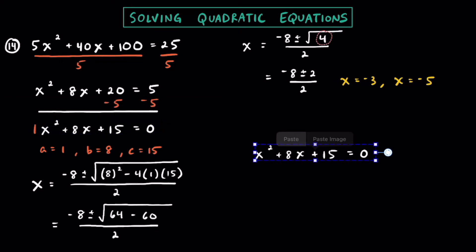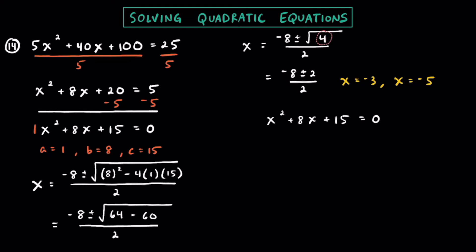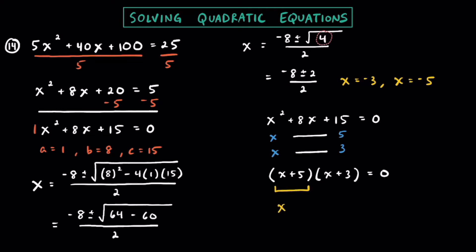Let's also show the factoring method using x squared plus 8x plus 15 equals 0. Since all terms are positive, I'm looking for factors of 15 that add to get 8 — so x plus 5 and x plus 3. You can foil it to check. Setting each factor to zero: x equals negative 5 and x equals negative 3. Voila — those are our two solutions again.